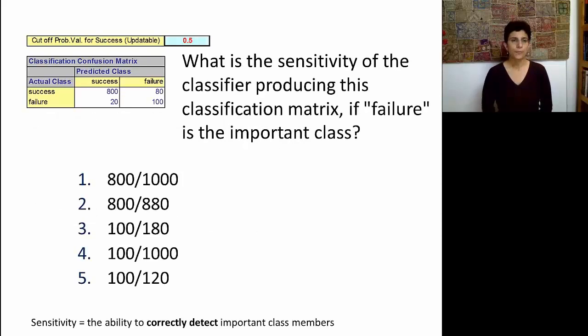Let's see an example. Here's our confusion matrix from before, and suppose that failure is the important class. What is the sensitivity of the classifier producing this classification matrix? Stop the video and see if you can figure it out. Okay, so to determine what is the sensitivity, we'll look at the failures. The actual failures are the two numbers in the lower row. So, in total, we had 120 failures. How many of these failures was our algorithm able to detect? Well, it was able to detect 100. And therefore, the sensitivity of this algorithm is 100 over 120. And therefore, solution number 5 is correct.